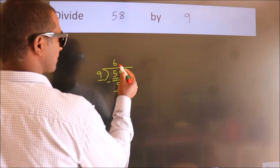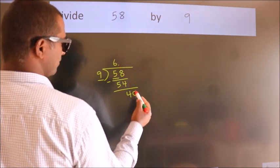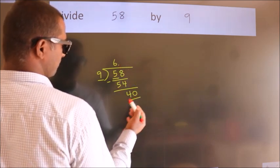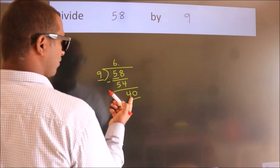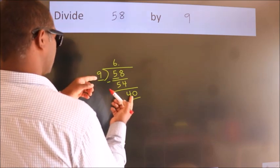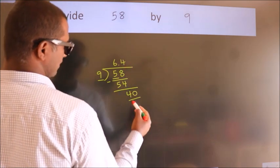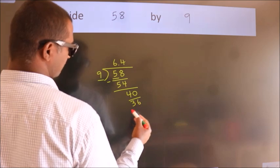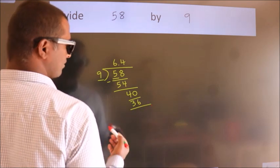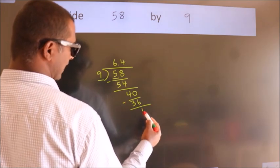So what we do is, we put dot, take 0. So 40. A number close to 40 in 9 table is 9×4=36. Now we subtract, we get 4.